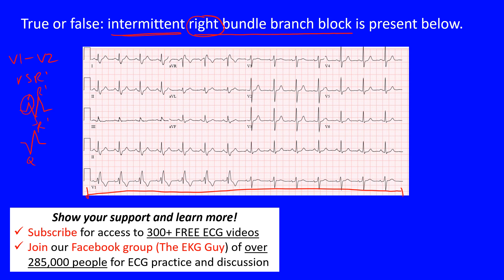In the lateral leads - V5 through V6, and even Lead 1 and AVL - you want to see slurred or wide S waves. These are prolonged S waves in the later portion of the complex. That's what you look for in V5 through V6.